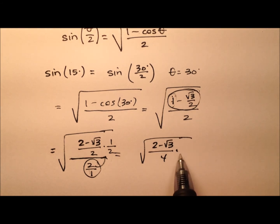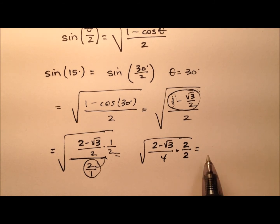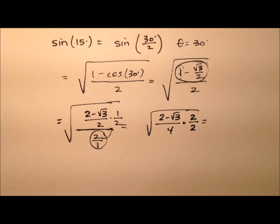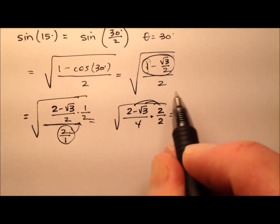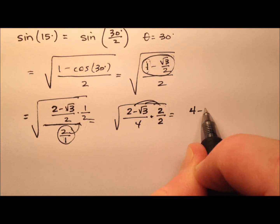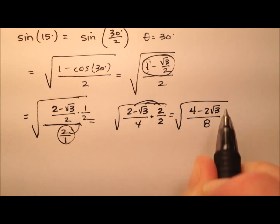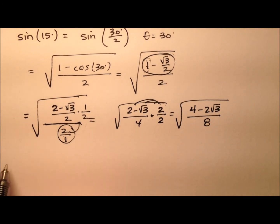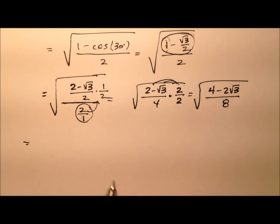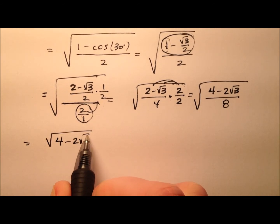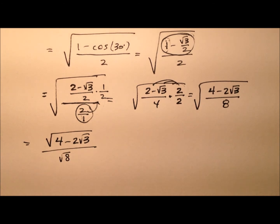We're going to multiply by 2/2 inside that radical — really just multiplying by 1, so we're not changing the value, just the form. Distributing that through gives us (4 − 2√3) all over 8, all under the radical. Then we split that into two pieces: the square root of (4 − 2√3) all over the square root of 8. This doesn't look very fantastic, and it especially doesn't match what we had before: (√6 − √2) / 4.